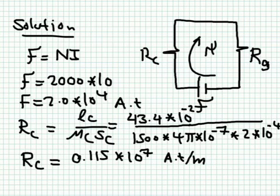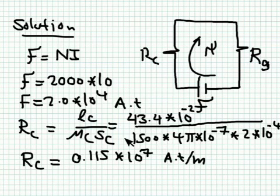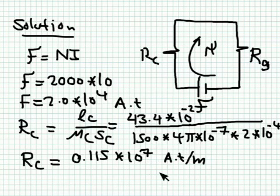To calculate the reluctance of the magnetic core: its length is 43.4 × 10^−2 meters; its permeability is μ_r × μ_0 = 1500 × 4π × 10^−7; its cross-section area is 2 × 10^−4 meters squared. Simplifying all this, the reluctance of the core is 0.115 × 10^7 ampere-turns per meter.